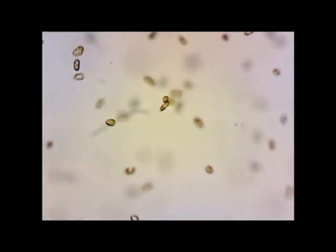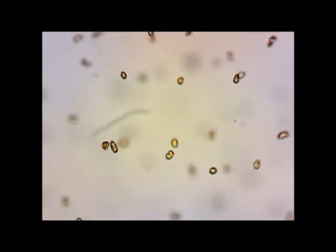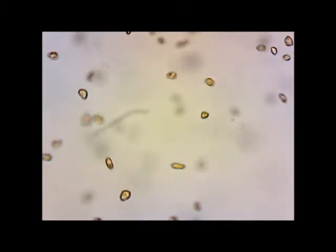If we look at the Heterosigma in higher magnification, we can see the chloroplasts around the edge of the cells and the paler nucleus in the center.